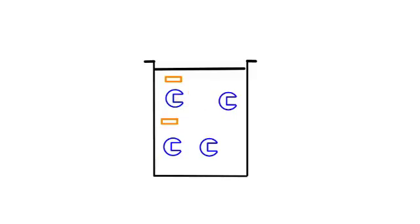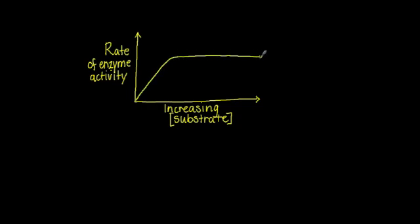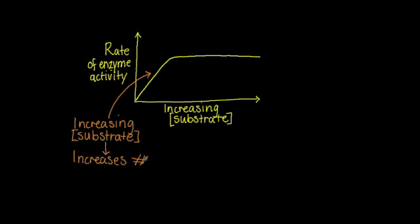On to having a look at substrate concentration. When we change substrate concentration we are assuming that enzyme concentration is remaining constant. Initially increasing substrate concentration from zero will increase the rate of reaction as the substrates randomly collide with the enzymes and the enzymes catalyze the chemical reaction.